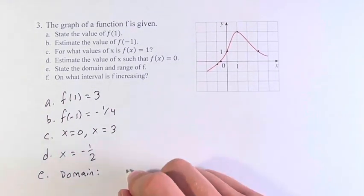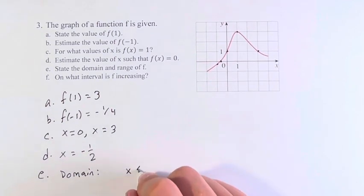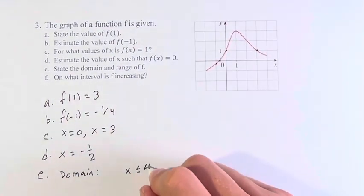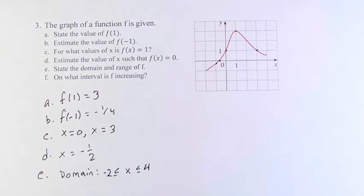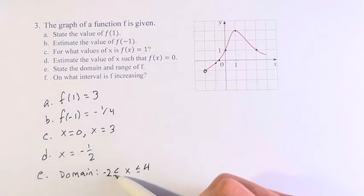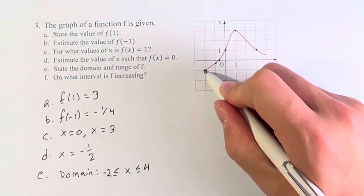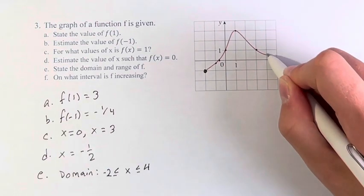Therefore, the domain is that x is between -2 and 4. We don't see an open circle on the end, which means it's less than or equal to. It can be equal to -2 and it can be equal to 4.